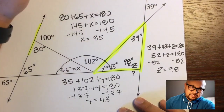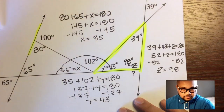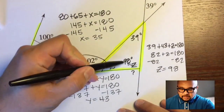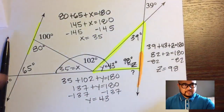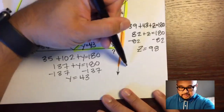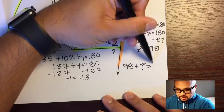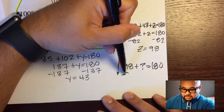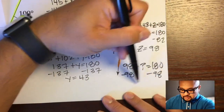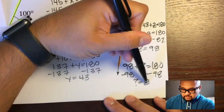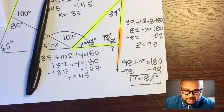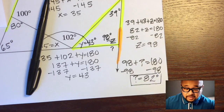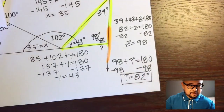Finally, this 98-degree angle and the missing question mark are supplementary because they make a straight line. So 98 plus question mark equals 180. Subtracting 98 from both sides, the question mark equals 82 degrees. We did it! I'm pretty confident that's the correct answer — it's 82 degrees.